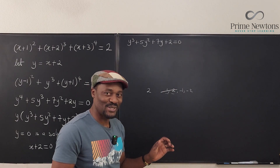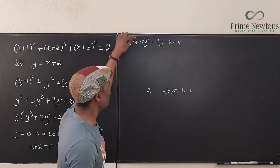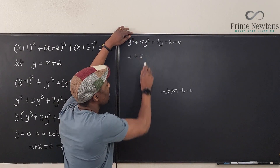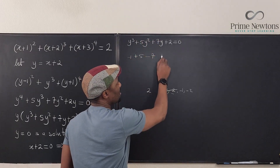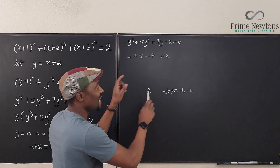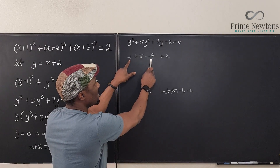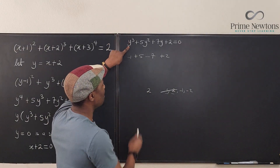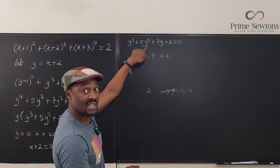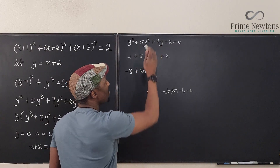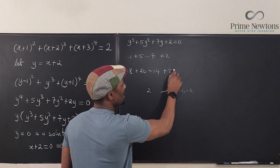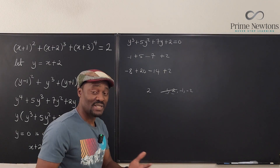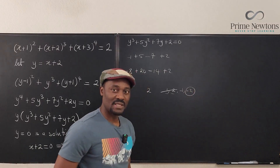Let's plug in negative 1: we get (−1)³ + 5(1) + 7(−1) + 2 = −1 + 5 − 7 + 2. Positives sum to 7, negatives sum to −8 — those aren't equal, so we don't get zero. Let's try negative 2: we get (−8) + 5(4) + 7(−2) + 2 = −8 + 20 − 14 + 2. Positives sum to 22, negatives sum to −22, so −22 + 22 = 0. Negative 2 is a rational root of this equation.